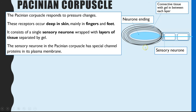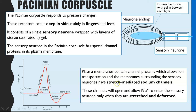The sensory neuron in the Pacinian corpuscle has special channel proteins in its plasma membrane — if you can't remember the structure of plasma membranes I've linked a recap here. These special channel proteins are stretch-mediated sodium ion channels. This means the sodium ion channels are closed unless they are deformed and stretched; pressure has to be applied to pull and stretch open the sodium ion channels, which then allows sodium ions to diffuse in.